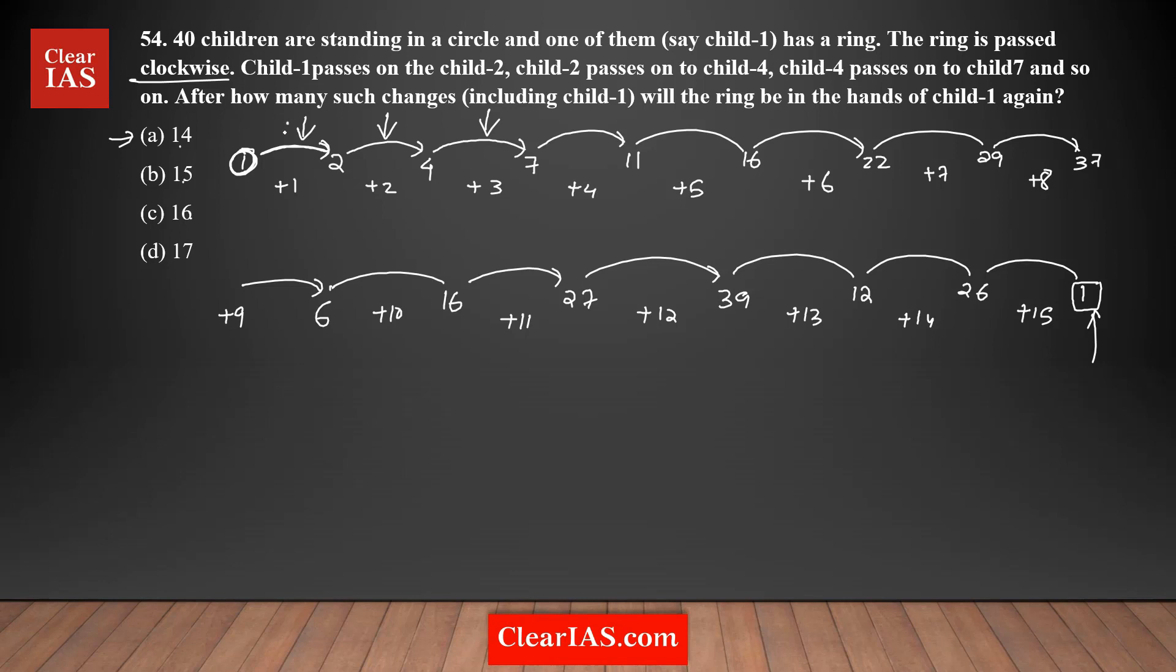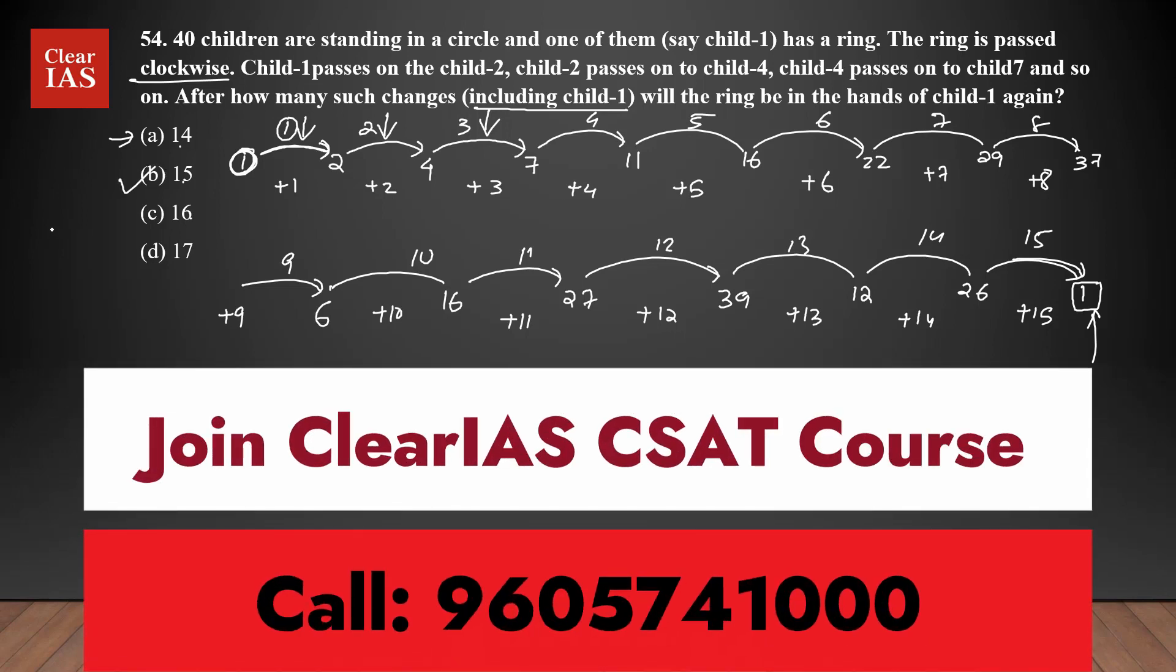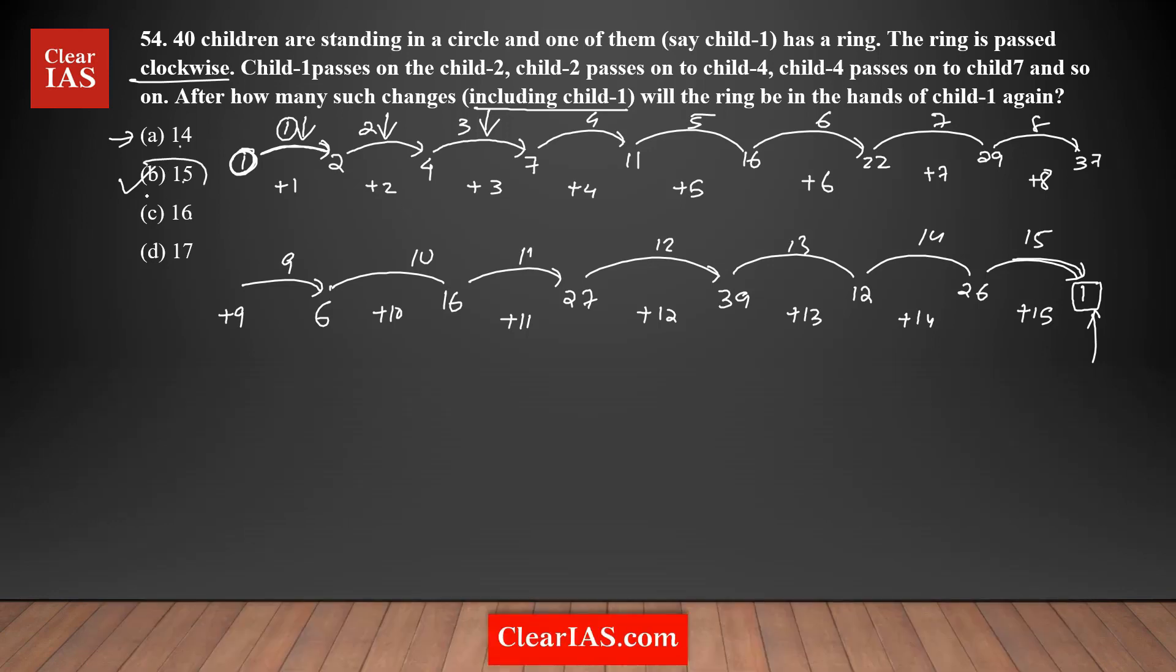I need to find how many changes. This is the first change, second, third, fourth, fifth, sixth, seventh, eighth, ninth, tenth, 11, 12, 13, 14, 15. It's clearly given that how many changes including child one, so I need to include that. Total 15 changes happened here so that the ring is back in the hands of child one. The answer is 15.